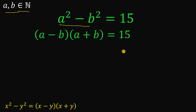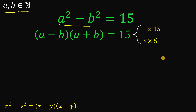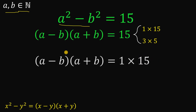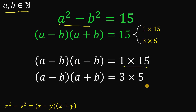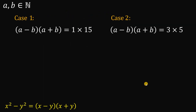Since a and b are both positive integers, we need to find the positive factors of 15. There are a few: we have 1 times 15 and 3 times 5. So technically we only have two cases. Case 1: a minus b times a plus b equals 1 times 15. Case 2: a minus b times a plus b equals 3 times 5.